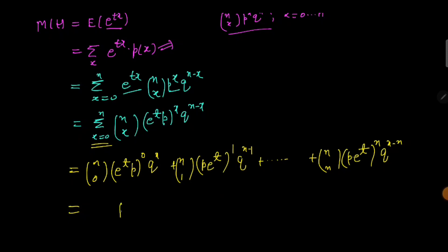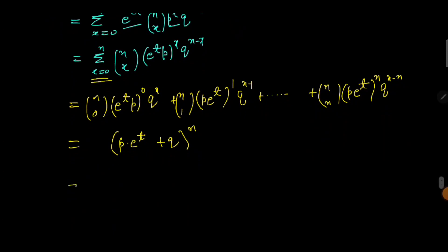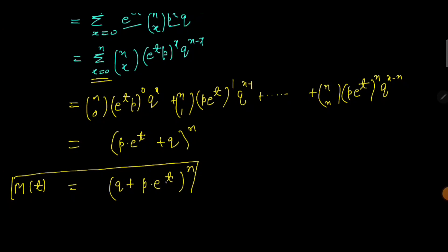This is simply the binomial expansion of q plus p times e to the power t, all to the power n. And this is the moment generating function of the binomial distribution. If you like this video, please subscribe to my channel. Thank you.